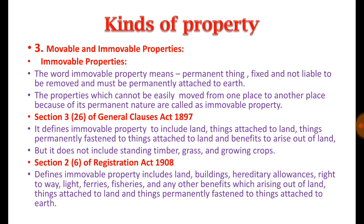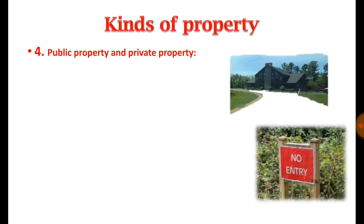In brief, movable properties are those which can be moved from one place to another and are generally available in the form of goods. Immovable properties — the major form being land and buildings — are those which cannot be moved from one place to another.